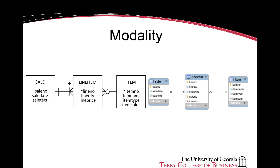In the case of sale, line item, and item, it is mandatory that every sale have a line item, indicated by the bar. But it is only optional that every instance of item have an instance of line item, indicated by the zero. However, every line item does have to have a corresponding item, indicated by the bar.